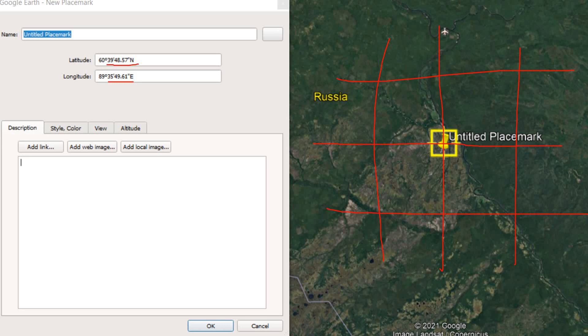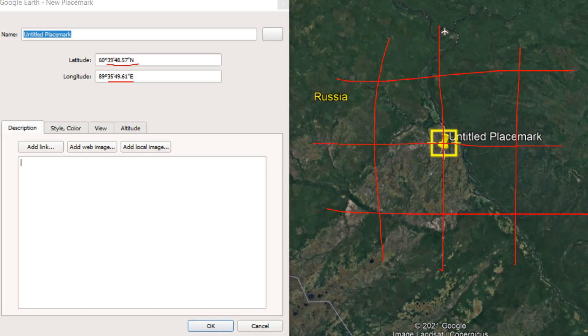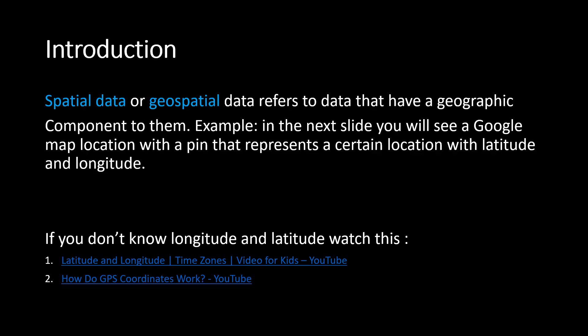Now let's talk about the geographic coordinate system. There are coordinate systems to specify a certain location on maps, and the coordinate system we just talked about is the geographic coordinate system. If you don't know what latitude and longitudes are and want to know a bit more about them, I have added links to two videos that you can watch. This entire presentation will also be provided to you as a PDF.